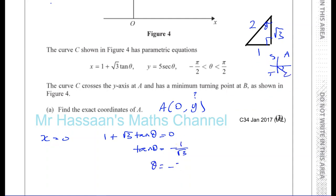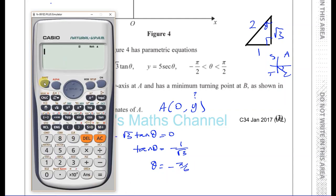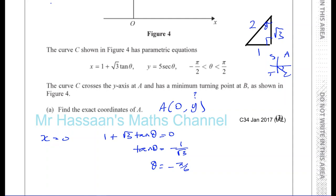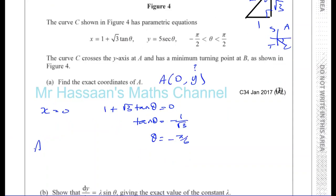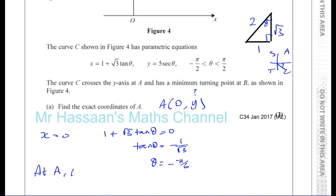Let's confirm: inverse tan of minus 1 over root 3 gives minus pi over 6. So at point A, theta is equal to minus pi over 6.